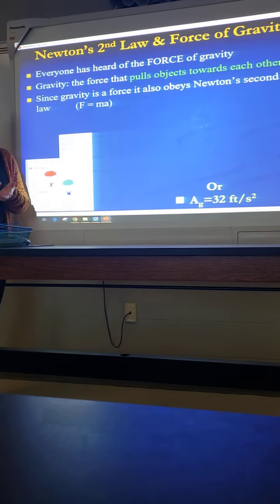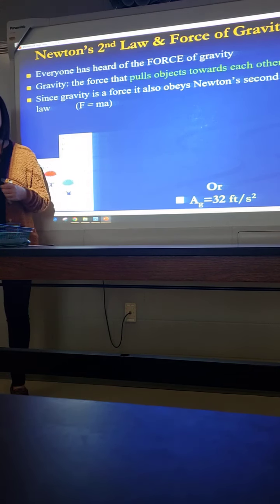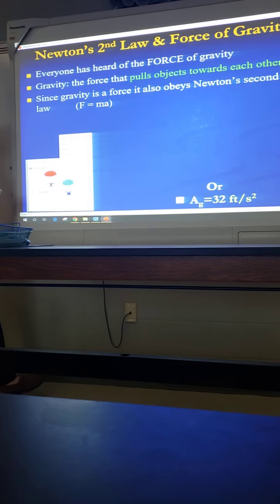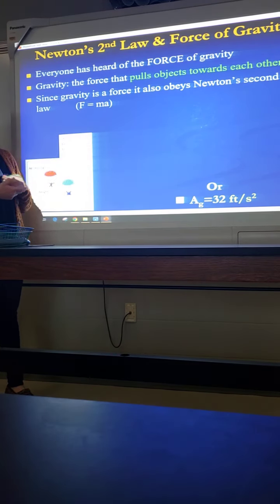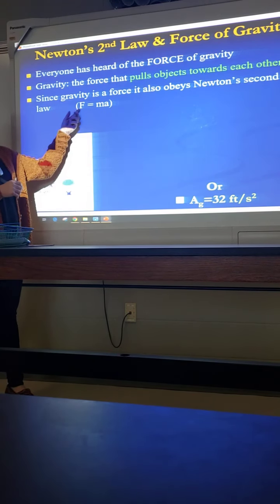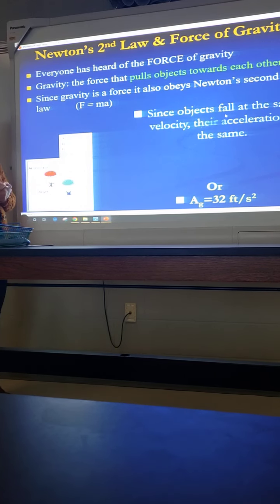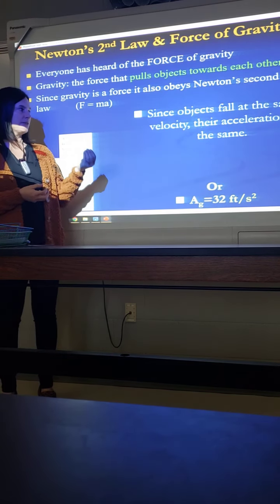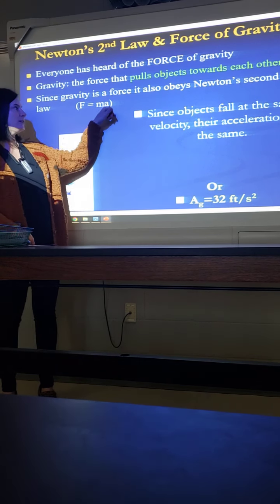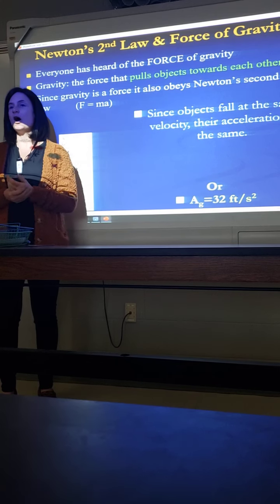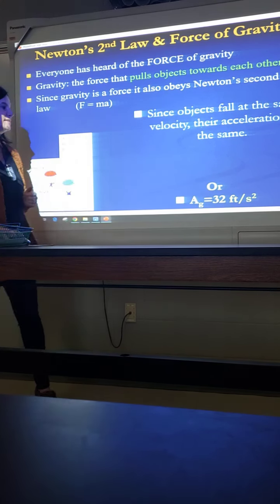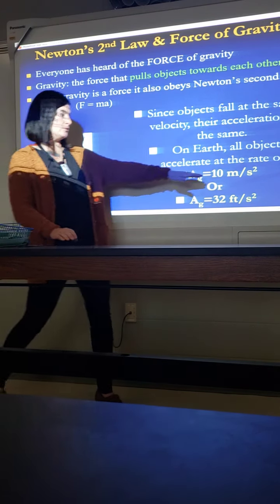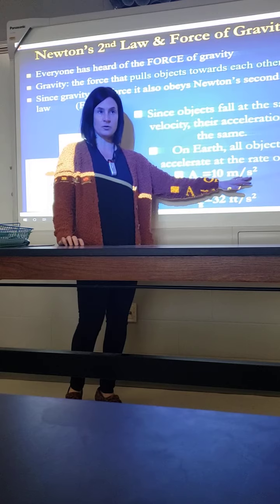Since gravity is a force, by default it has to follow Newton's second law — otherwise it wouldn't be a law, because a law has to work all the time in every situation. So if Newton's second law is force equals mass times acceleration, and gravity is a force, we can look at that force as gravity. We also know that objects here on Earth fall and accelerate at the same rate, so we can substitute a specific acceleration — the acceleration due to gravity here on Earth — which has a set value. It is 10 meters per second squared.